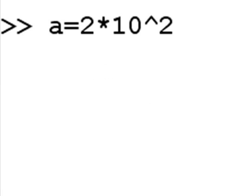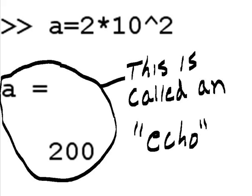MATLAB. A equals 2 times 10 to the second power. This is called an echo.